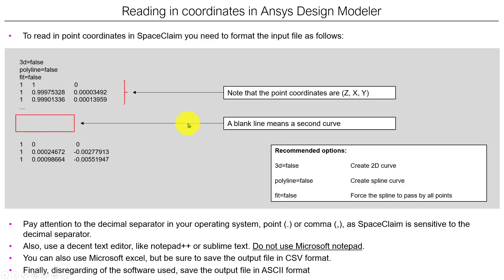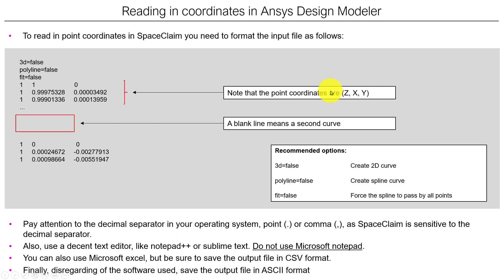Leaving a blank line tells SpaceClaim to interpret that as another separate curve. For reading airfoil coordinates, my recommendation is to read like this: you put '3D false', 'polyline false', and 'fit false'. This is the best format to read airfoil coordinates or spline coordinates. Then you give the coordinates. The format here is a little bit different — the first column is the set coordinate, then X and Y. Be careful, it's a little bit counter-intuitive, but this is how it was designed.